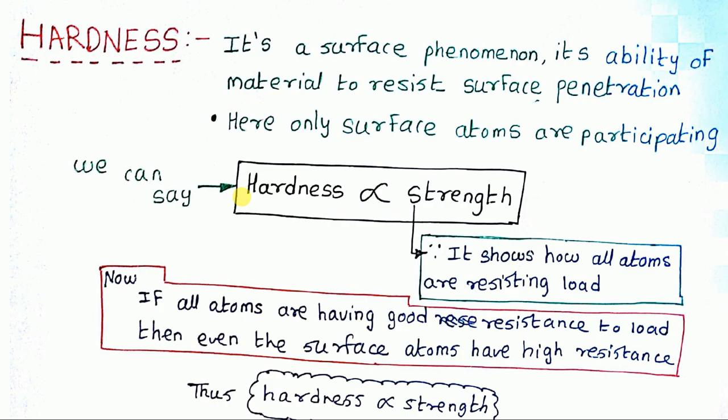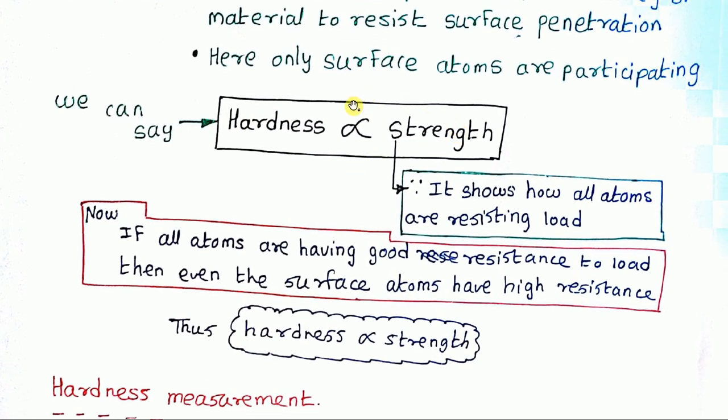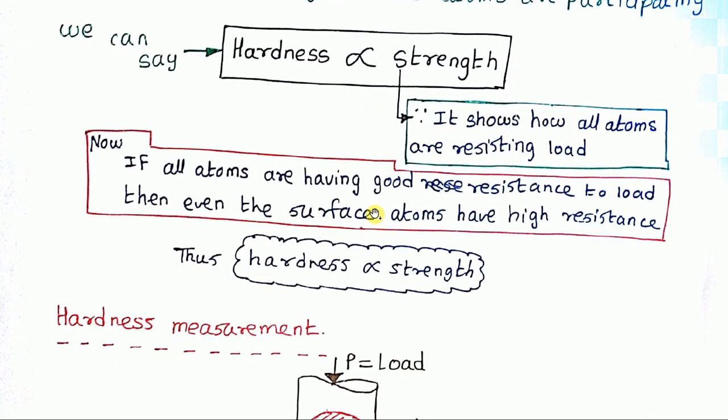I can also say that hardness is proportional to strength. Let's see how they are proportional. Consider strength. Strength represents how all atoms are resisting the load. If all atoms have good resistance to load, that implies even the surface atoms have high resistance. Thus, hardness is proportional to strength. Higher the strength, higher the hardness.